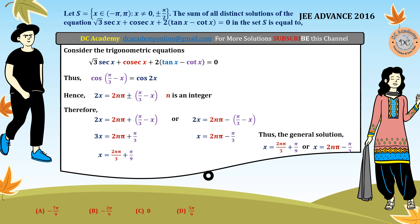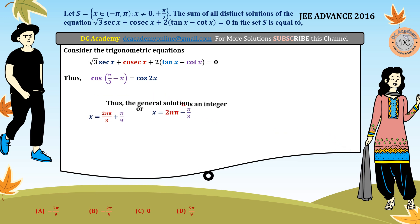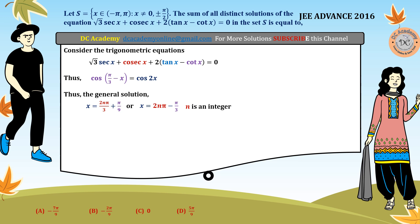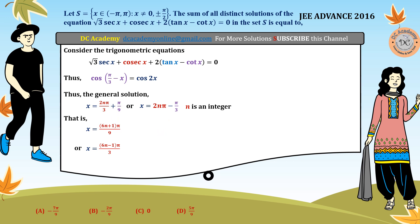We need to find how many solutions for x are possible inside the interval minus pi to pi. We simplify: x can be written as (6nπ plus 1) divided by 9 for the first family. One approach is to substitute n equal to 0, 1, minus 1, and so on, and check the value of x. Here we use an inequality approach instead, which can be useful for certain problems and is not very time consuming.